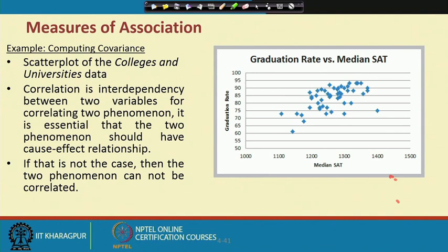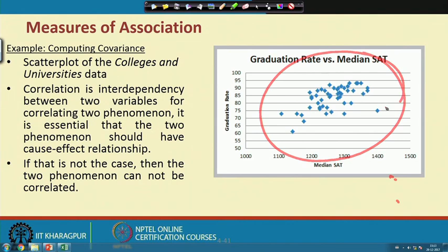Before establishing the association or linkage, you can first generate a scatter plot. For example, plotting median SAT score against graduation rate gives you some visual idea that there is a kind of relationship. The idea is that correlation or covariance is an interdependence technique between two variables, but it may not give you exactly the cause and effect. It will ensure that since there is a relationship or association, some cause-and-effect relationship exists, which can be examined later in regression analytics.